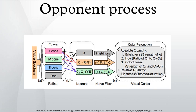The color opponent process is a color theory that states that the human visual system interprets information about color by processing signals from cones and rods in an antagonistic manner.